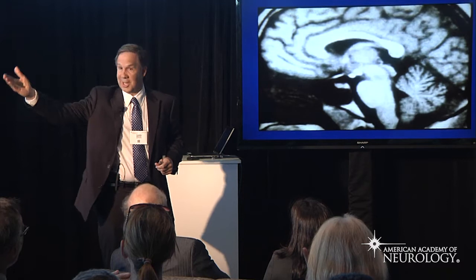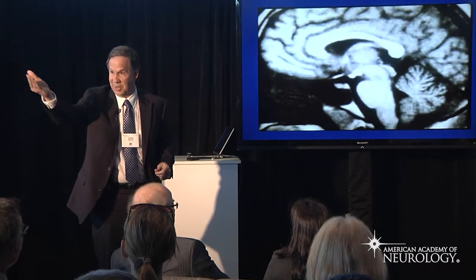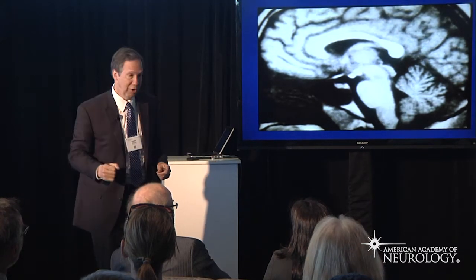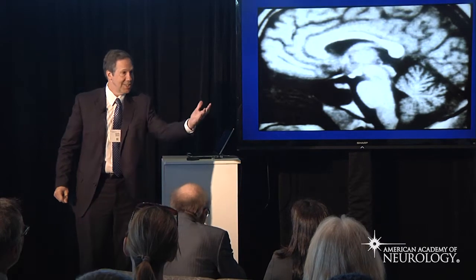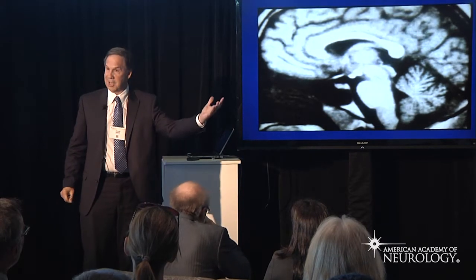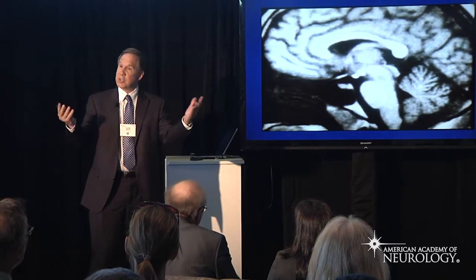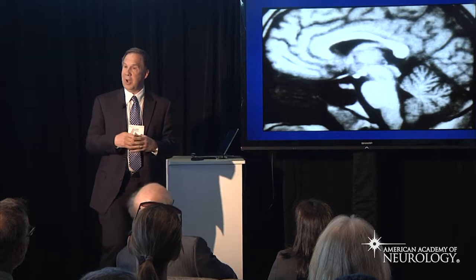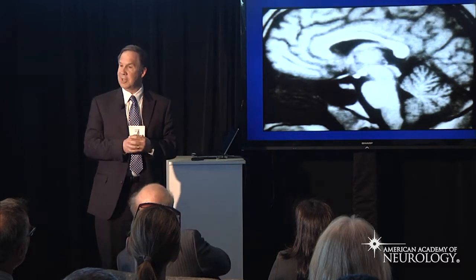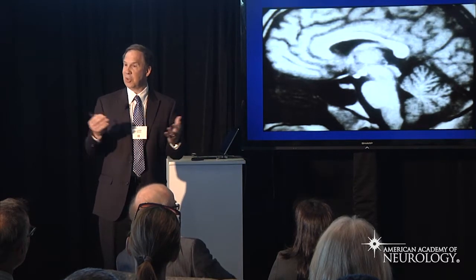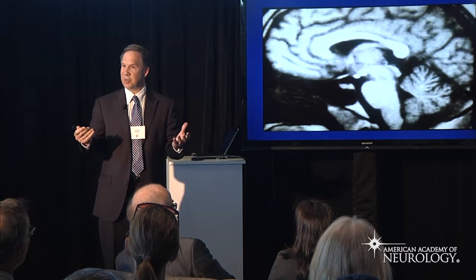Afferent information can come onto the brainstem via a cranial nerve, and efferent information can exit the brainstem via a cranial nerve. So on the Jersey Turnpike, exit 7 is Bordentown — but for the neurologist, it's the facial nerve.